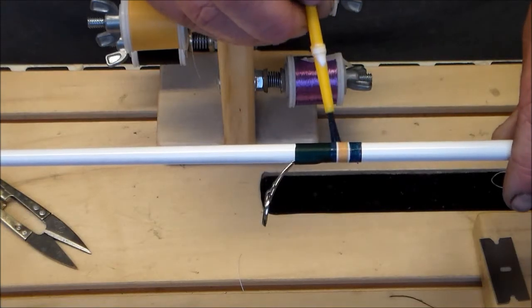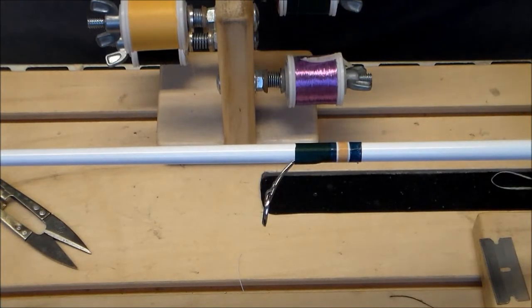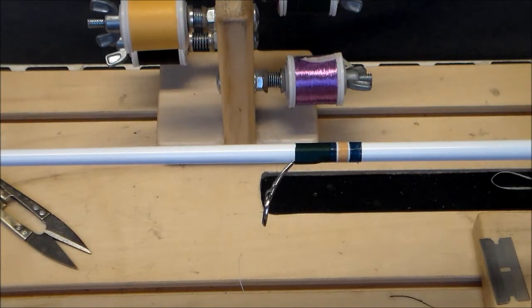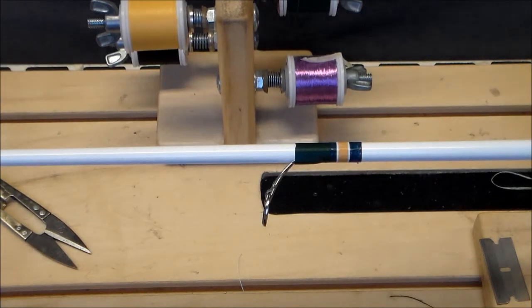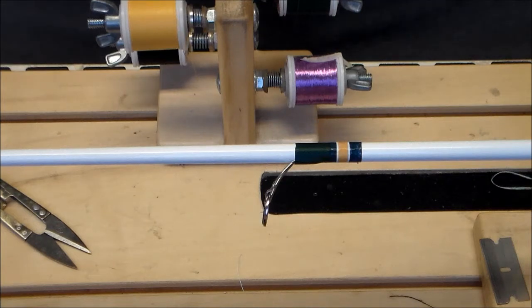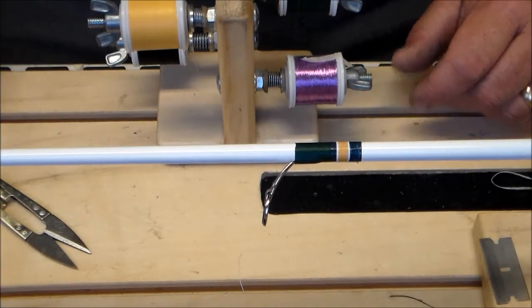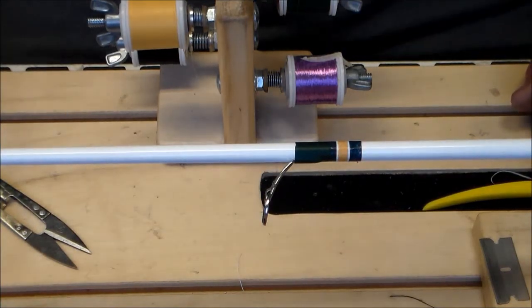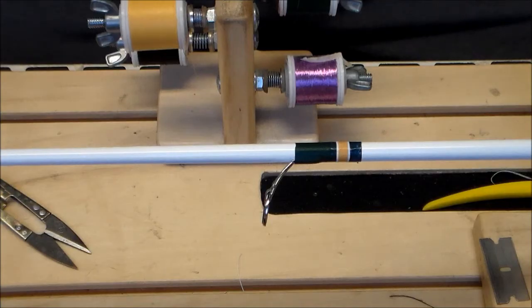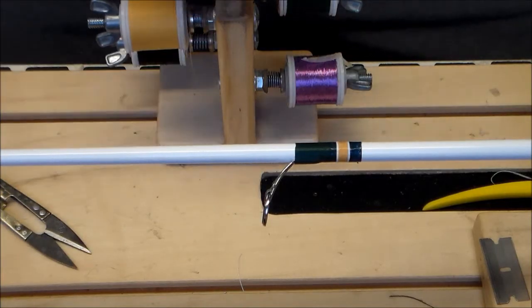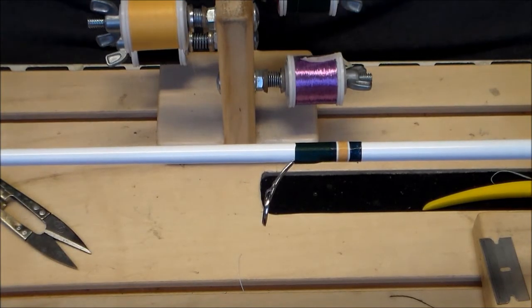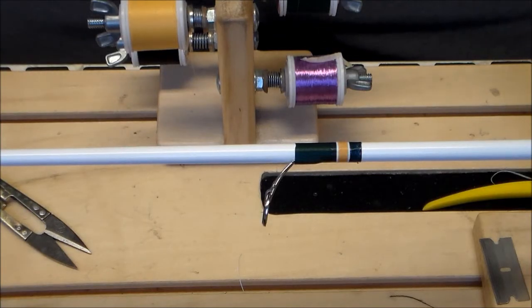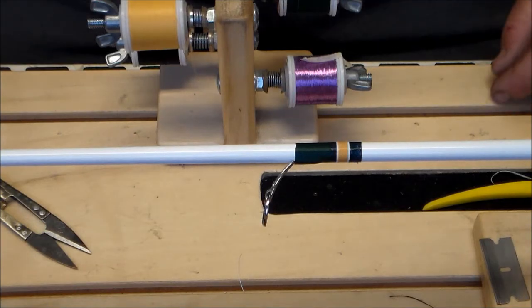So there we have a multicolor trim band set up so that you can represent your alma mater sports team or your favorite professional sports team. What I typically do, this is my own preference, I will do the first two guides on the rod, the stripper and the one that immediately follows the stripper, with the colors. And then the rest of them I'll just use the main color or the base color, in this case the dark green. And then back by the butt section of the rod, I'll do several trim bands just to kind of dress it up a little bit.